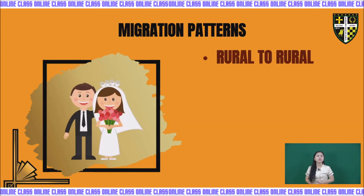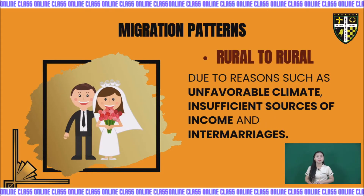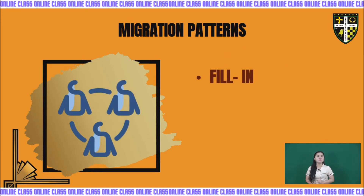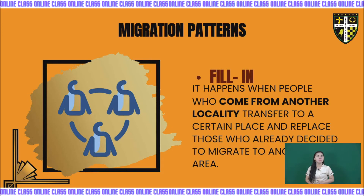Next, rural to rural migration occurs due to reasons such as unfavorable climate, insufficient sources of income, and intermarriages. Next, we have fill-in, which happens when people from another locality transfer to a certain place and replace those who already decided to migrate to another area. An example is a family that decides to live permanently in Laguna but leaves their Manila residence for another family to occupy.